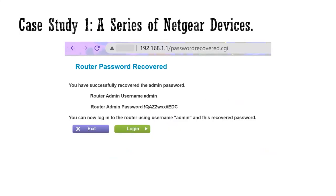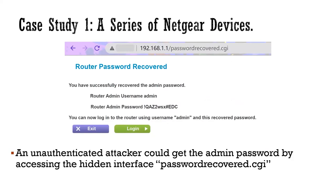CVE-2017-5521 reported that an unauthenticated attacker could get the admin password of a router by accessing the hidden interface passwordrecovered.cgi, shown in the figure. This vulnerability affected 13 Netgear device models. The hidden interface is not a web file but a function within the binary web server. IoTScope discovered this vulnerability as it extracts strings inside binary web servers to generate probing requests. The matched keywords are admin, username, and password. In the experiments, we found that this vulnerability affects the WNDR-4000 device model, which is not included in the report of CVE-2017-5521.